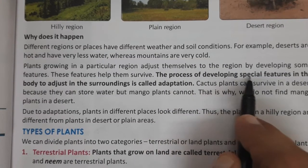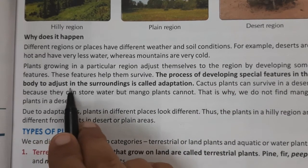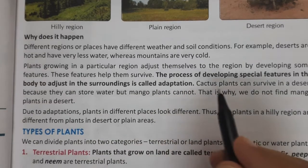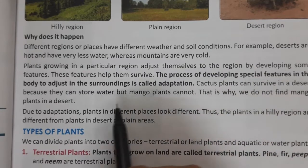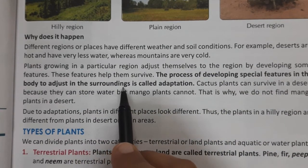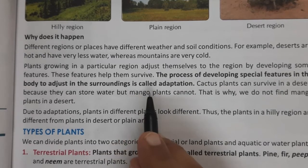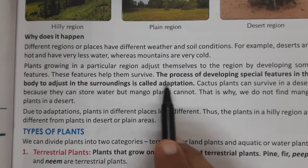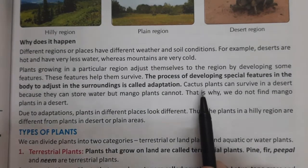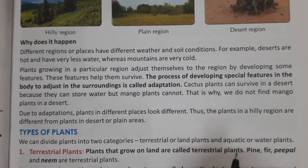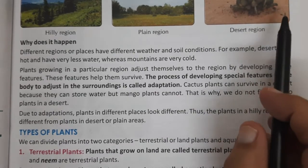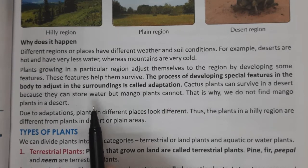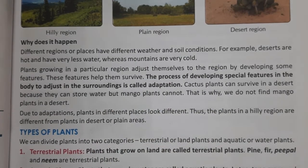The process of developing special features in the body to adjust in the surroundings is called adaptation. Cactus plants can survive in desert areas because they can store water in their bodies. They can store it in their bodies.